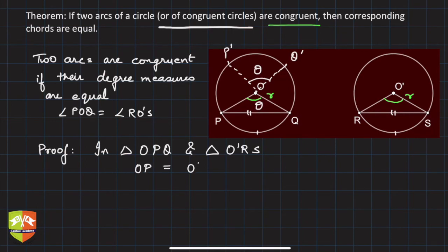Similarly, OQ is equal to O'S. Why? Same logic—radii are equal. And angle POQ is equal to angle RO'S because of the same degree measure.